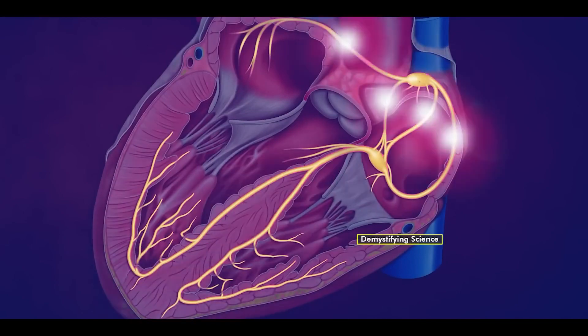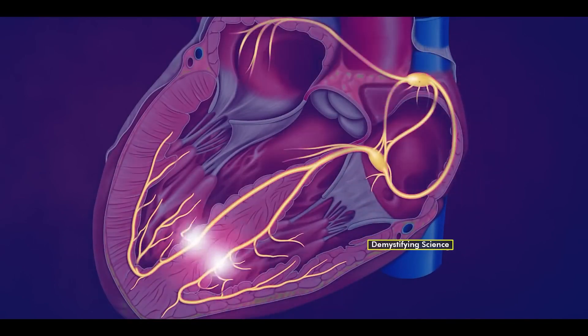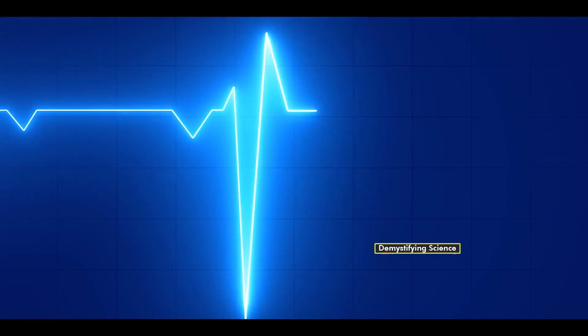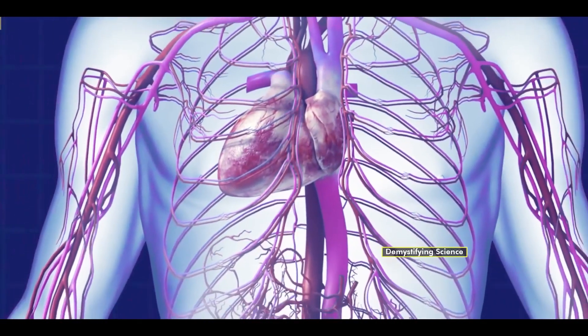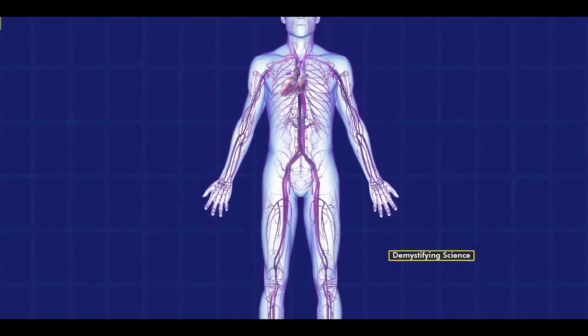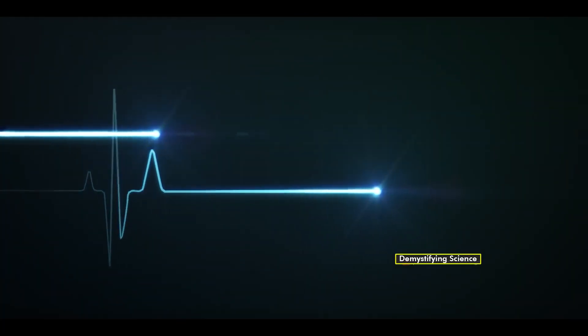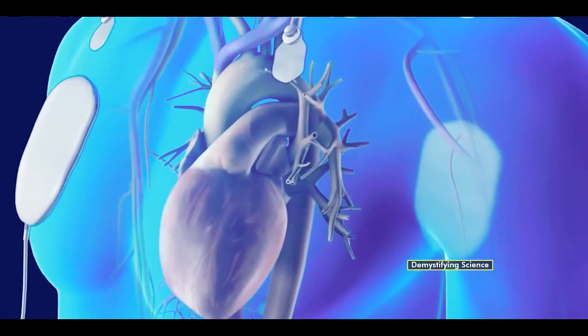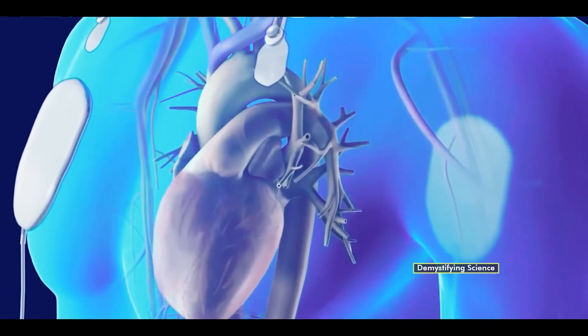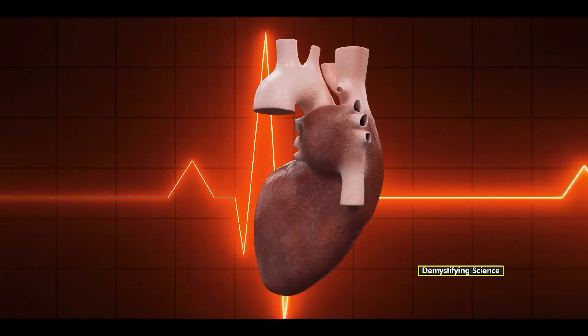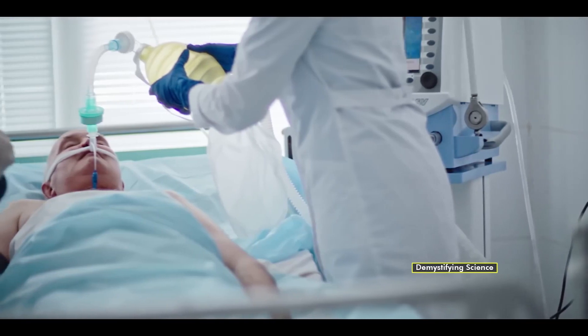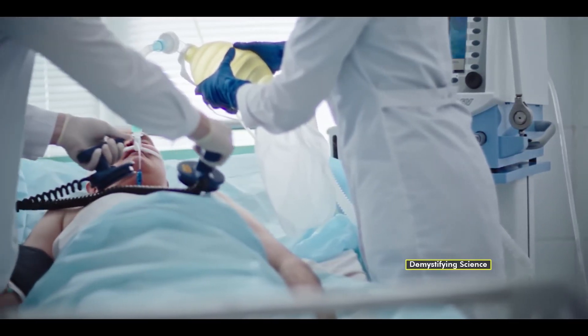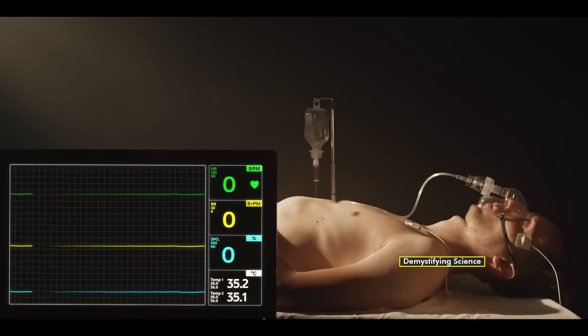In ventricle fibrillation, the electric impulse can't reach the heart ventricles, and the heartbeat becomes abnormal, disturbing the supply of blood and oxygen to the body organs and leading to sudden cardiac arrest. In such cases, defibrillators provide an electric shock to the heart so that the heartbeat can return to normal. If this condition is not treated within 5 to 10 minutes, it can lead to death.